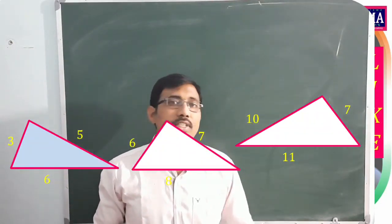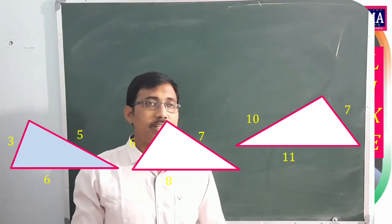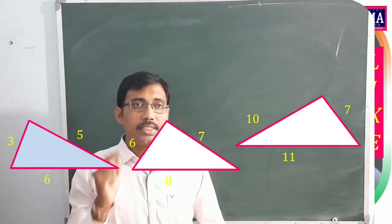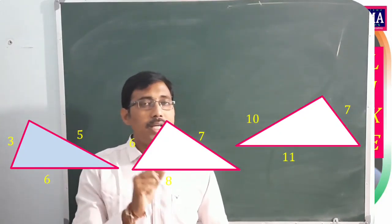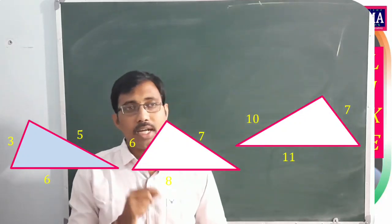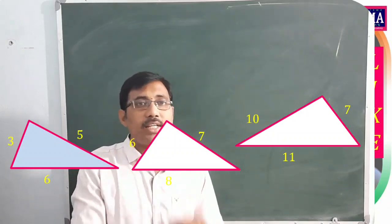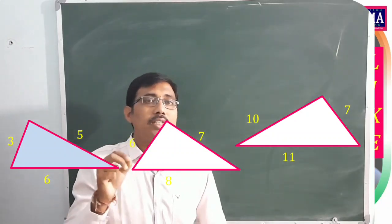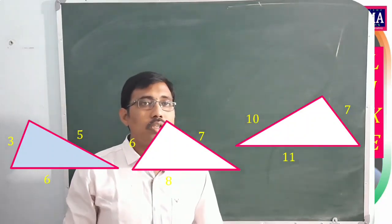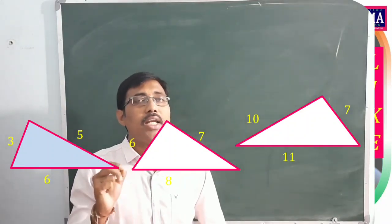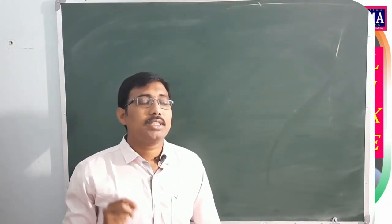Observe the first figure with sides 3 cm, 6 cm, 5 cm. The second figure has sides 6, 7, 8 units. The third figure has sides 10, 11, 7 units. In all three triangles, the sides are different lengths. When a triangle has three sides of different lengths — AB ≠ BC ≠ CA — it is called a scalene triangle.